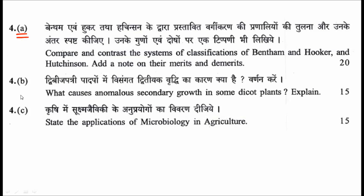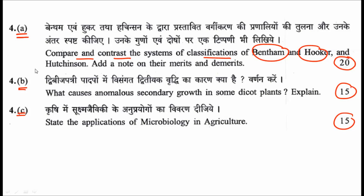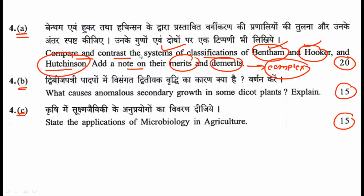Question four is divided into three parts — A, B, and C — carrying 20, 15, and 15 marks. The first sub-question asks you to compare and contrast the systems of classification of Bentham and Hooker and Hutchinson, and to add a note on their merits and demerits. This is somewhat complex — you need to describe both classification systems and then discuss their merits and demerits, earning 20 marks.